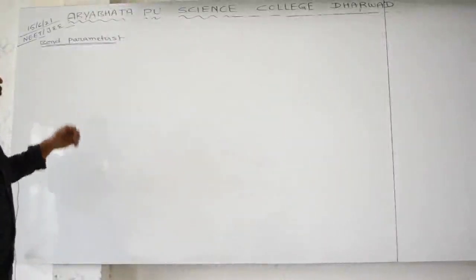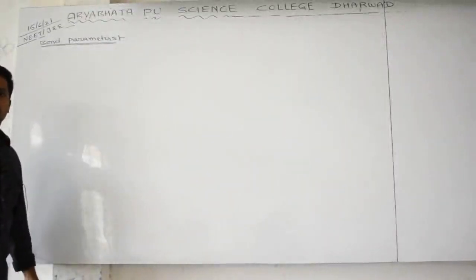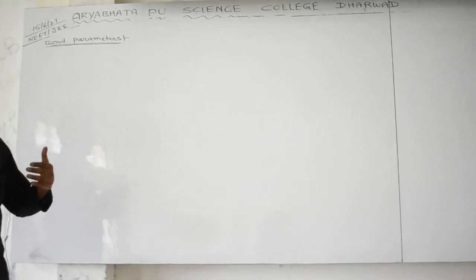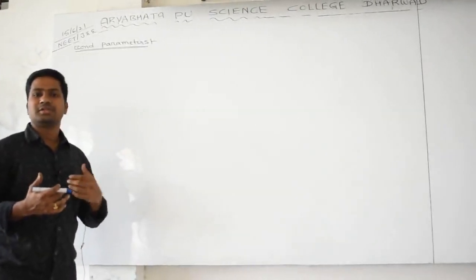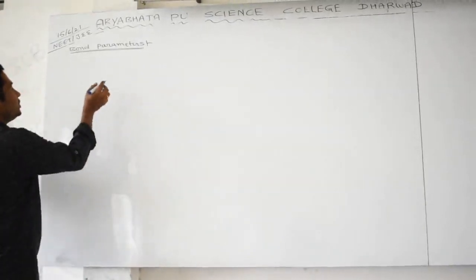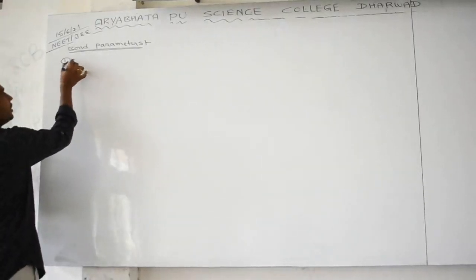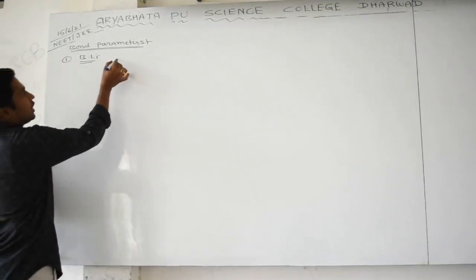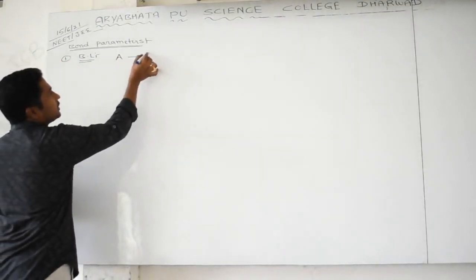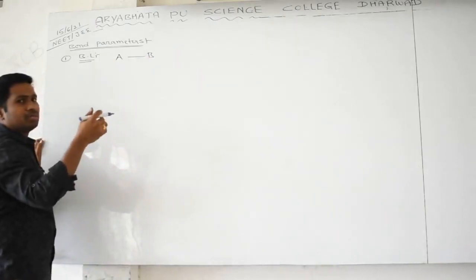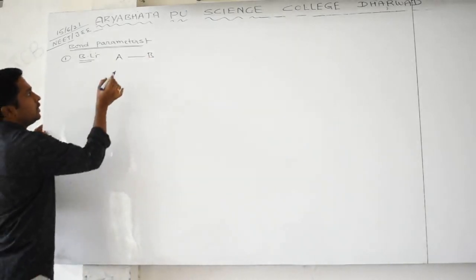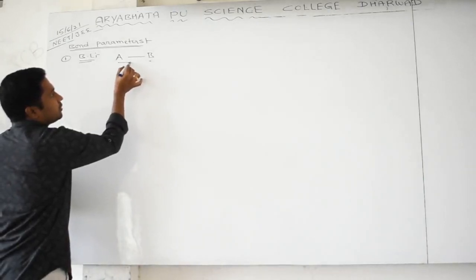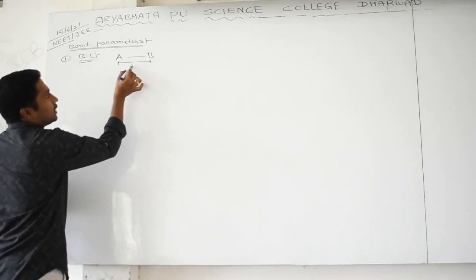We will study the remaining concept of bond parameters. Bond parameters are criteria used to study whether a molecule is stable or unstable. The first one is bond length. The meaning of bond length is the internuclear distance between two bonded atoms, whether connected by a single, double, or triple bond.